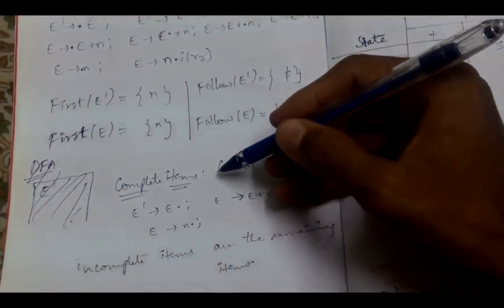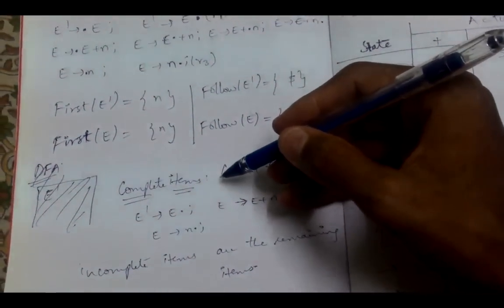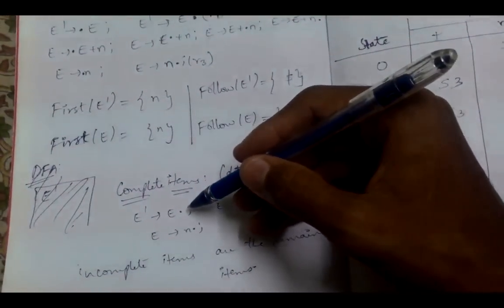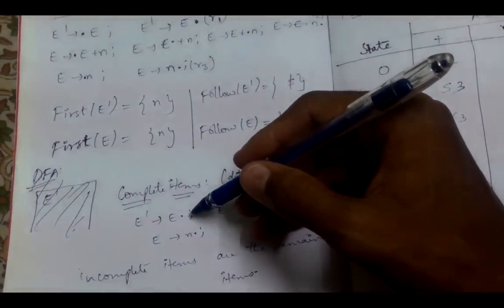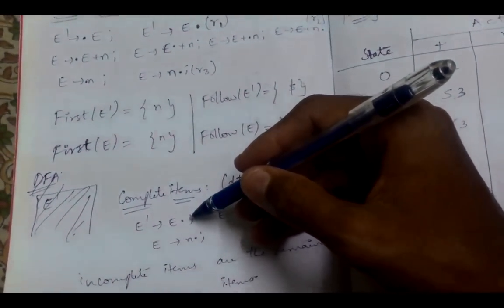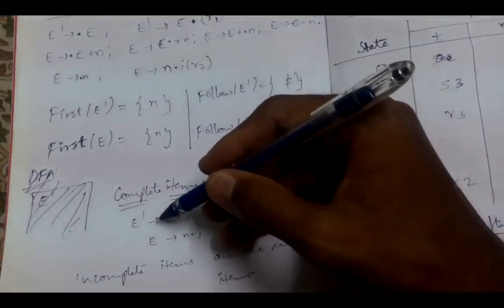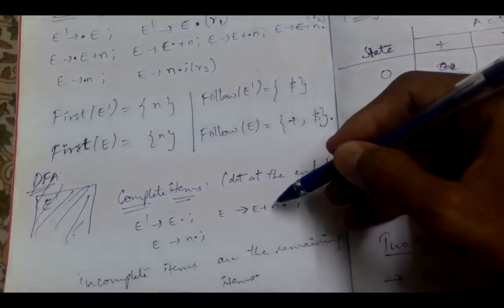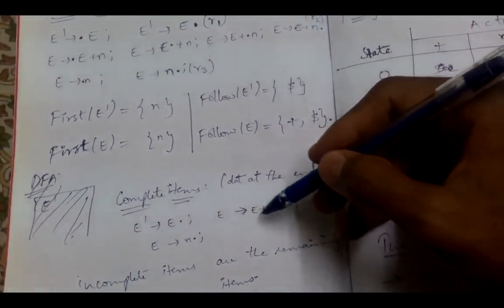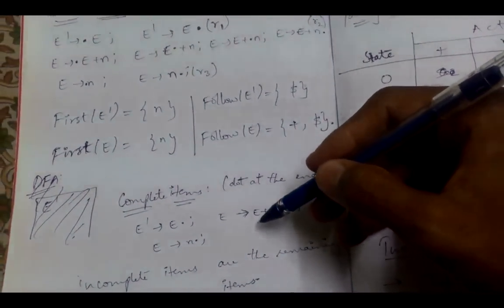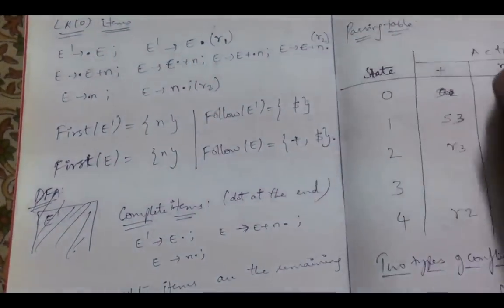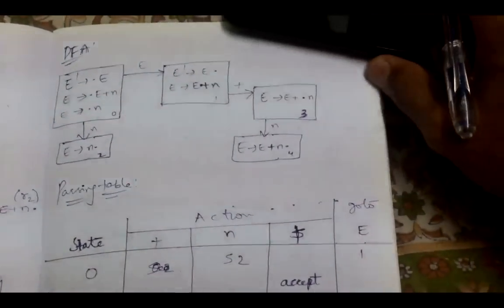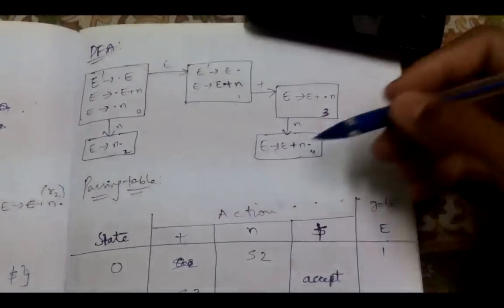We can differentiate these LR(0) items as complete and incomplete items. Complete items are those which have the dot at the end, meaning parsing is completed for that production. There are three complete items. All the remaining LR(0) items are incomplete items. Now we are going to construct the DFA for that grammar using SLR(1) parsing.